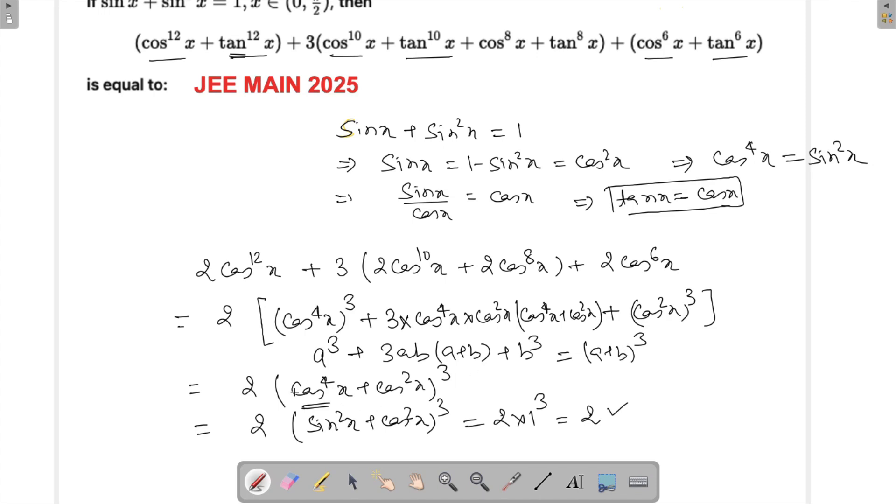Once we did this, we came to here, and only if we go back to this expression sin x equals to cos square x, then we will get cos raised to the power 4x as sin square x, and this sin square x plus cos square x will become 1. So 2 will be our answer, and that is it for this question.